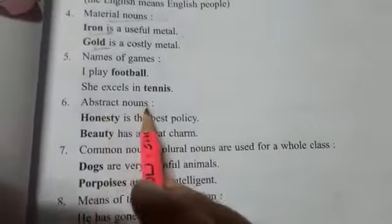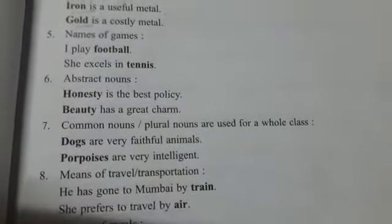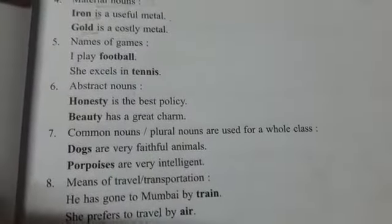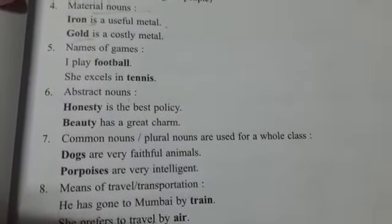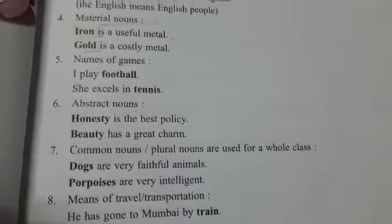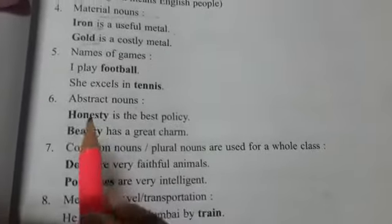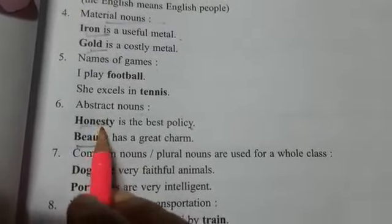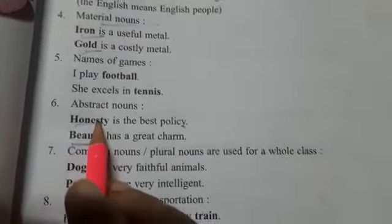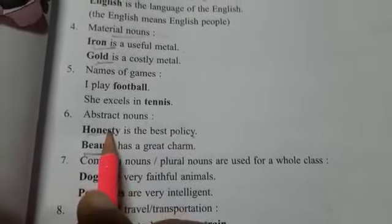Next is abstract nouns. Abstract noun woh hota hai jo we can't see but we can feel. For example, 'Honesty is the best policy.' Honesty and beauty are abstract nouns. With these also we will not use any article.